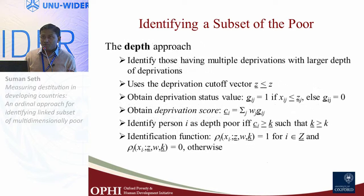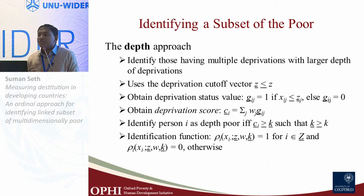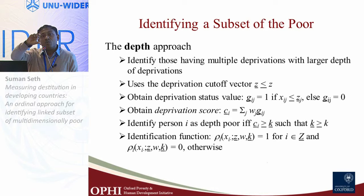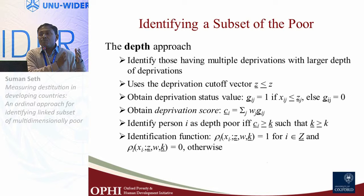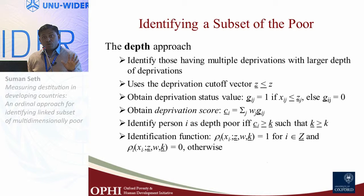The other approach is the depth approach, which we explore in this paper. When we have ordinal variables, it prevents us from computing the gap or squared gap used in the Foster-Greer-Thorbecke method, because we do not know the distance between categories. Instead, we use a different — deeper — set of deprivation cutoffs, which is why we call it the depth approach. The rest of the identification follows the same steps: identify deprivations, take the weighted sum, compute the deprivation score, and set a cutoff to identify the much poorer. A third mixed approach could combine both intensity and depth.